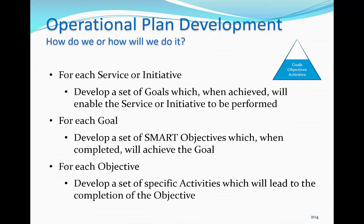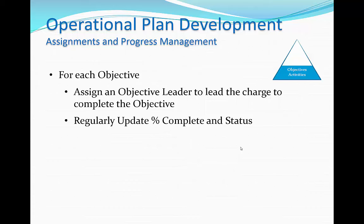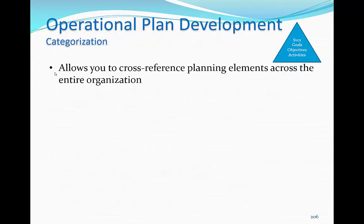Everything up to this point is encompassed in the Plan phase of the Deming or PDCA cycle we discussed. Next, we'll talk about the Do, Check, and Act/Adjust phases. As part of the Do phase of the PDCA cycle, for each objective, assign an objective leader to lead the charge and complete the objective, and regularly update the percent complete and status flag. For each activity, assign a team leader and team members, assign external partners, and regularly update the percent complete and status flags. For each activity team leader and team member, you have the option of assigning an FTE, or full-time equivalent, value to reflect the portion of their time they should be spending on a specific activity. This will allow you to track the workload for each system user, as well as a total personnel resource investment for the planning elements.